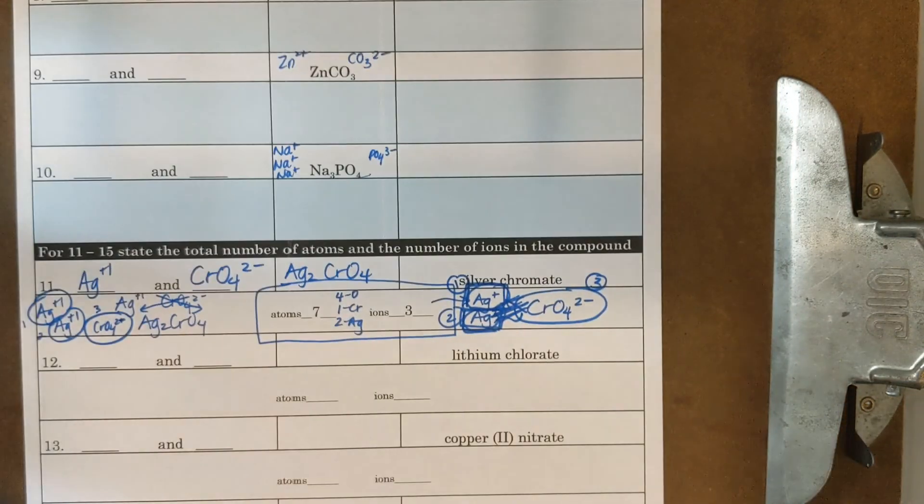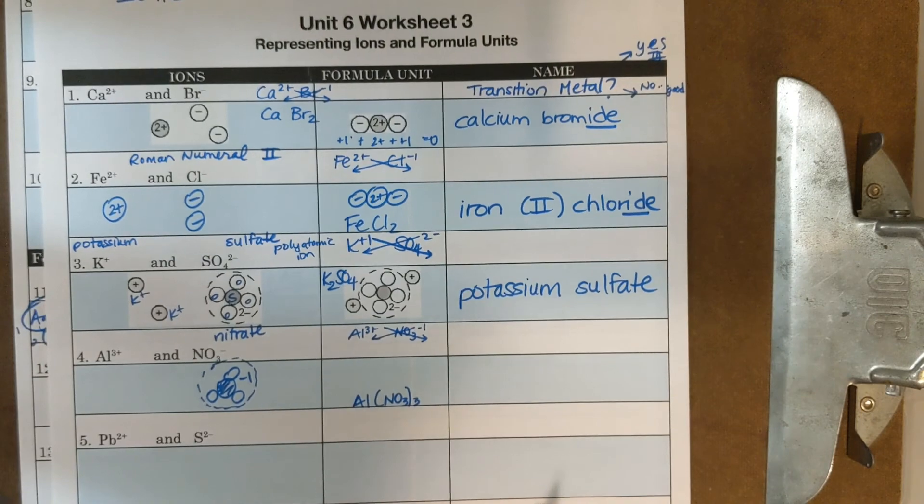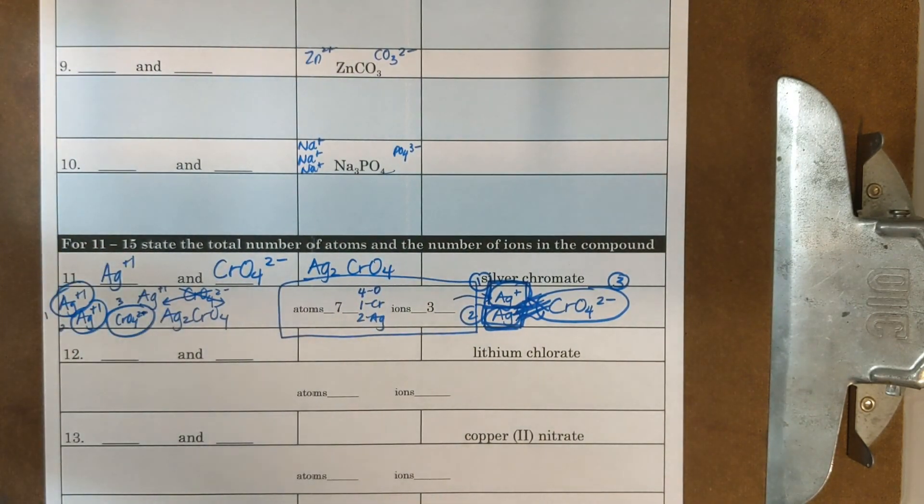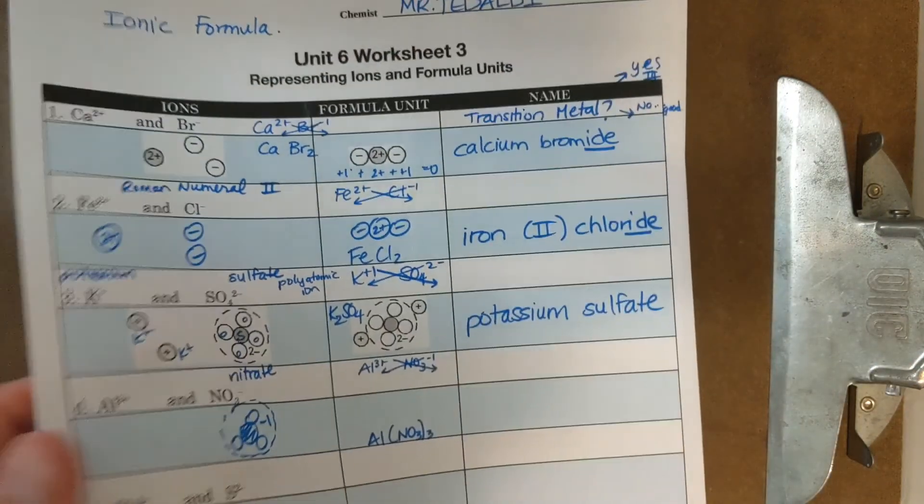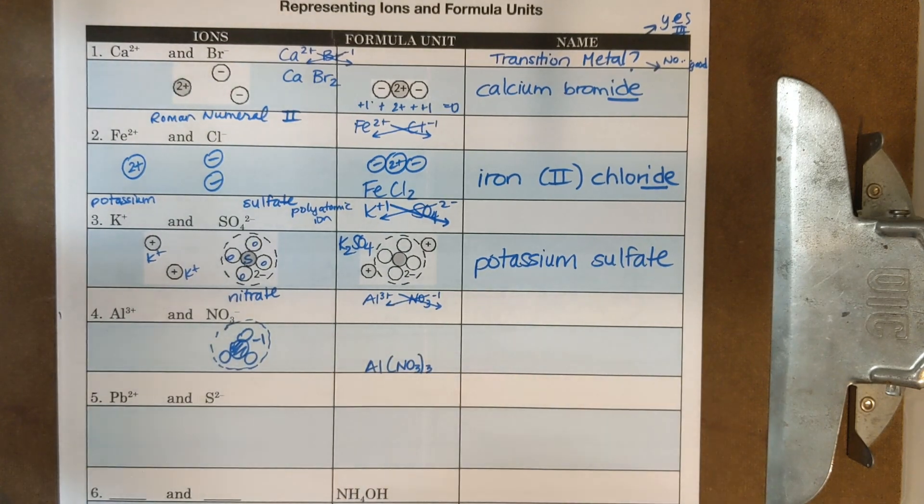If you have any other questions or concerns about naming and writing ionic formula, these are all the different ionic formulas you're going to need, or counting atoms and ions, please see me in class and ask me any questions that you need to. Otherwise, I would like you to finish worksheet number three and you will need to know this information later on this week.